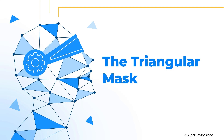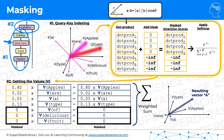We're continuing our tutorials on masking, and today we're going to talk about the triangular mask. In the previous tutorial we discussed how masking works — in short, we add negative infinity to the dot product when we want to hide certain words from the transformer so it can't look ahead in its prediction.